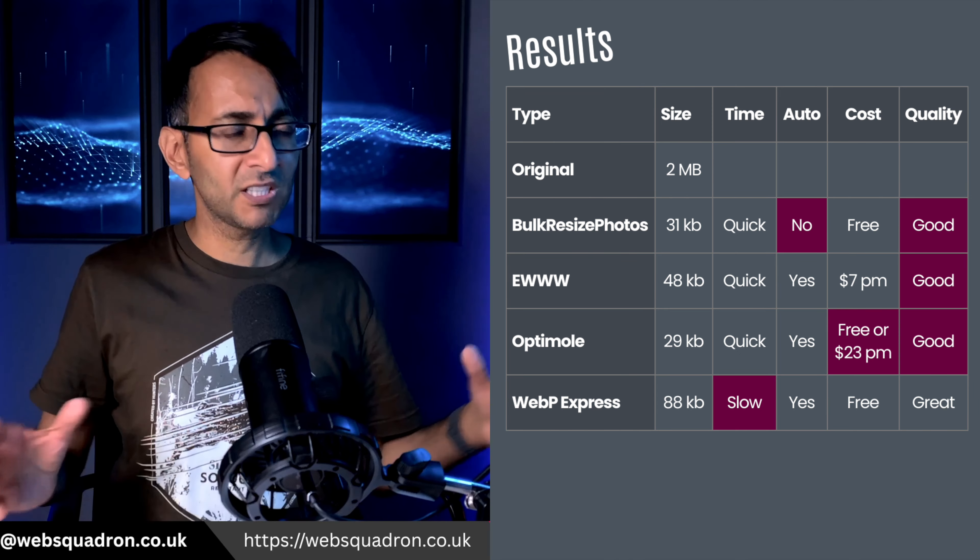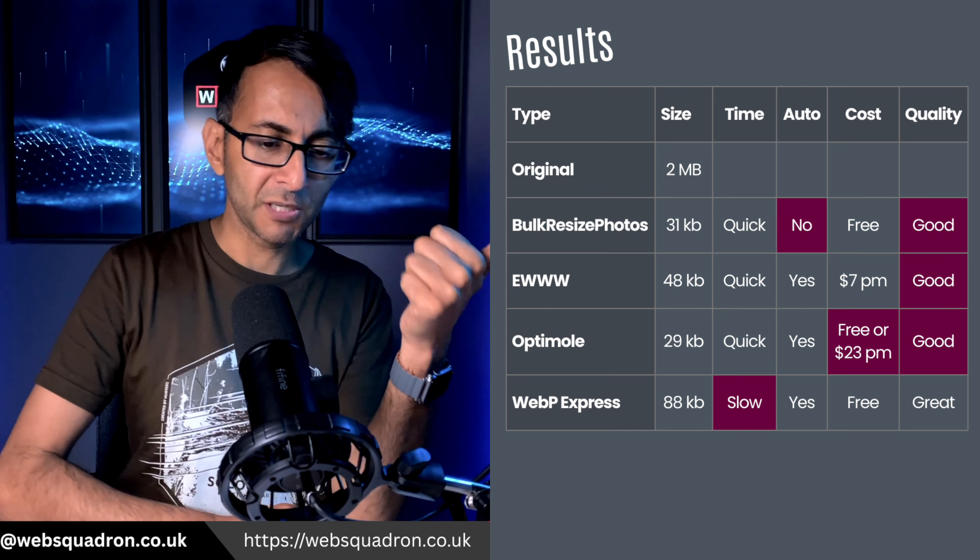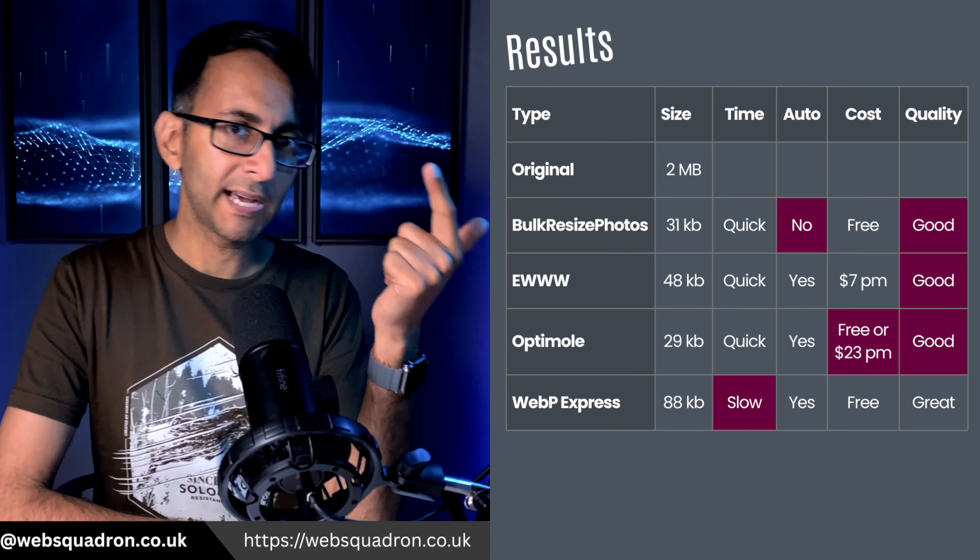If you are doing a bulk conversion of images you've already got, EWWW, Optimal, and WebP Express all have a bulk conversion setting, which is great if you're doing this retrospectively. With Bulk Resize Photos you can't do that — you have to take the images out, put them back in, make sure your file names are correct and that it's pulling through the right image. So there could be a bit of legwork there.